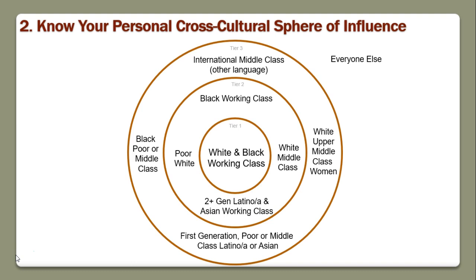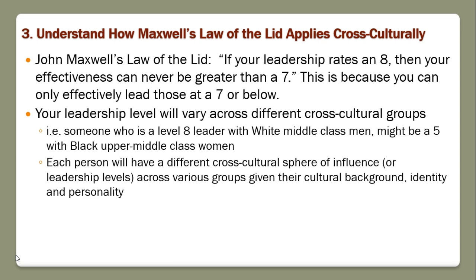The third thing, which is a related principle, is about John Maxwell, a very famous Christian leadership writer. He talks about something called the law of the lid. The basic idea is that if you're a level eight leader, you can only effectively supervise leaders that are level seven, because if someone is a level nine leader, they should probably be leading you — or they'll go start their own organization. The idea is you want to try to grow your leadership level.